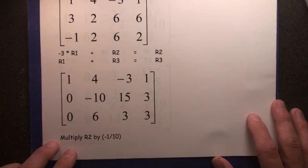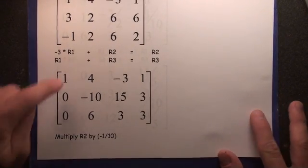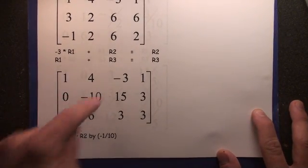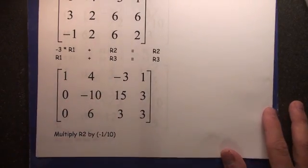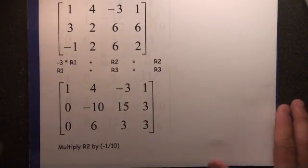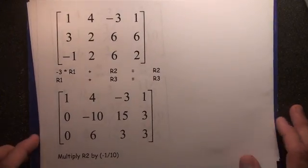When you do that, bam, you get this new matrix: 1, 0, 0, 4, negative 10, 6, negative 3, 15, and 3. You can double check the answers by pressing pause and working out each of these entries off to the side.